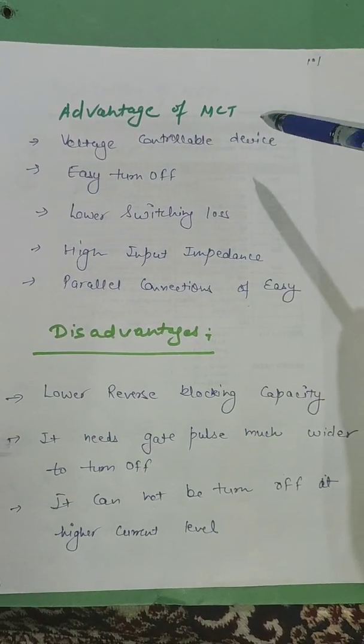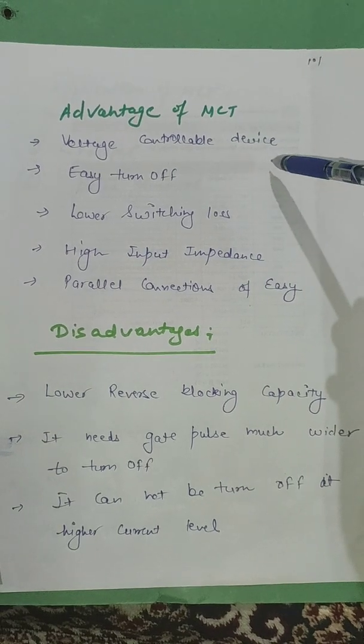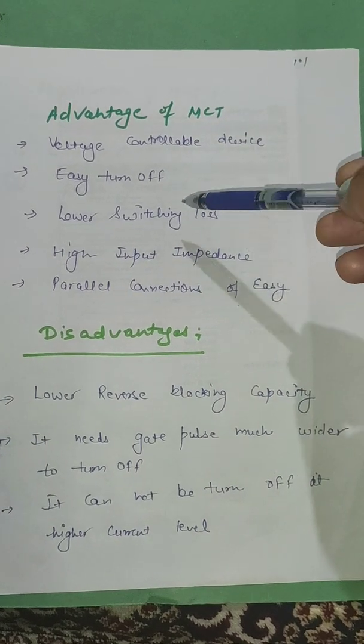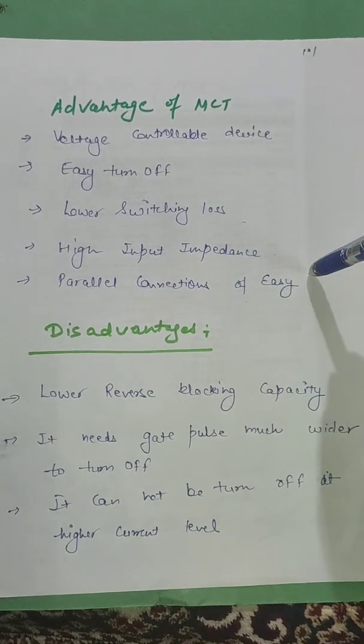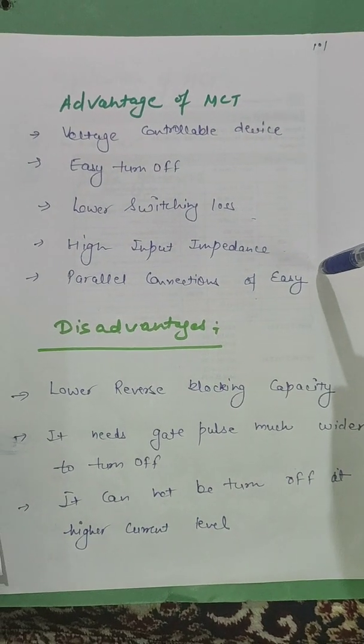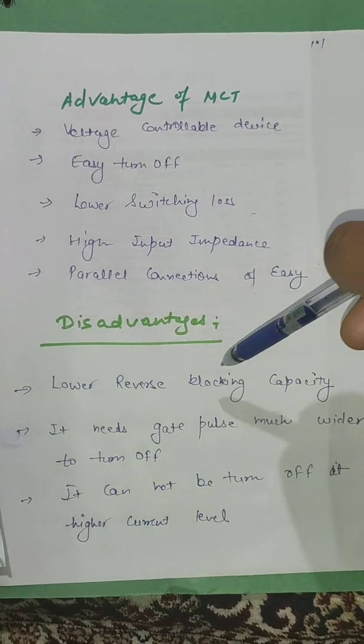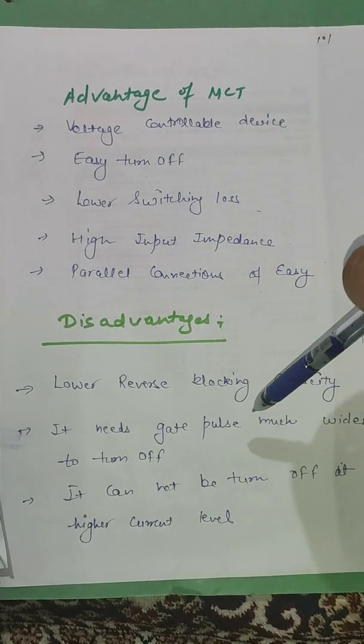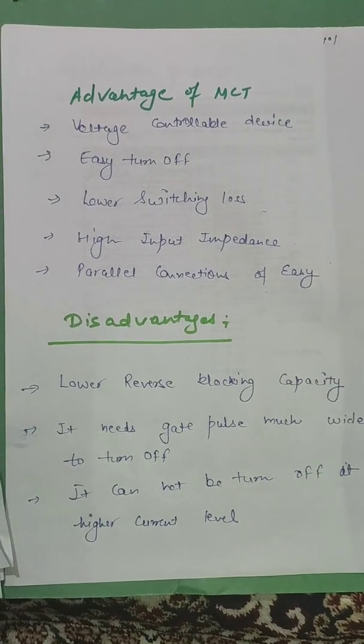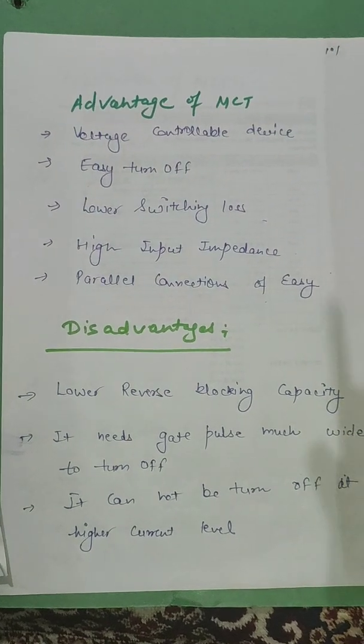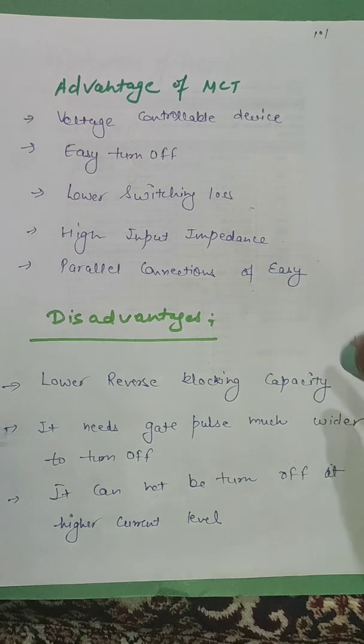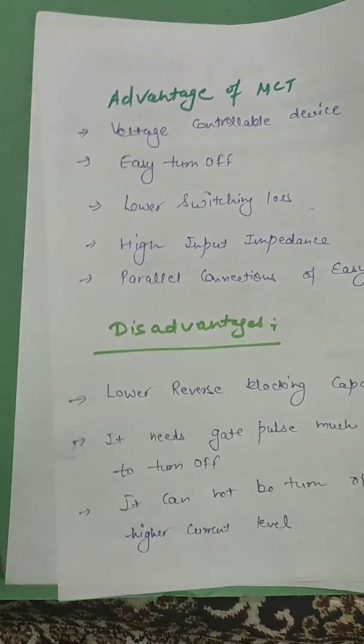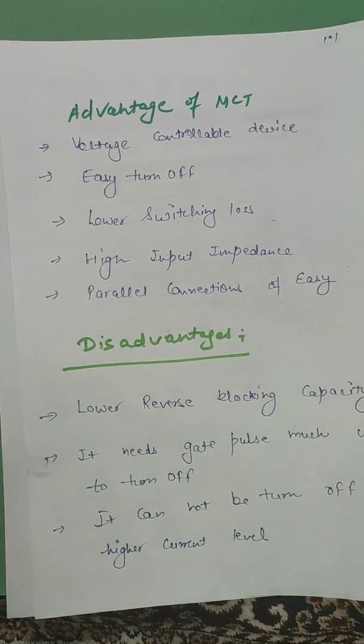These are the advantages of MCT. It is voltage control device. Easily turn off. Lower switching loss. High input impedance. Parallel connections are very easy of MCT. This advantage. It has lower reverse blocking capacity. It needs gate pulse much wider to turn off. It needs much wider gate turn off range. It cannot be turned off at high current level. These are the advantage of MCT.